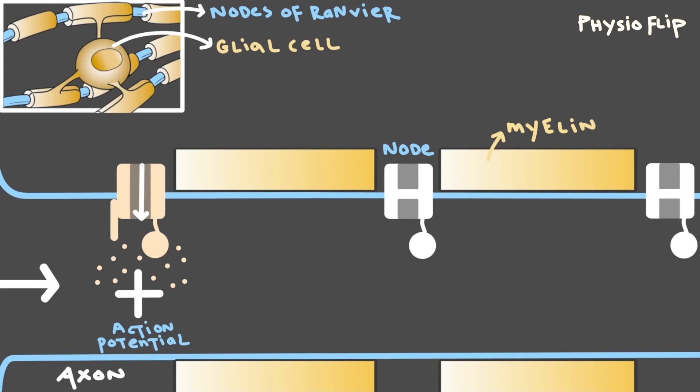After the sodium has entered the cell though, it will begin to diffuse down the axon. Normally, diffusion is a terrible way to send electrical signals. Diffusion over long distances is extremely slow and diffusion of electrical charge will lose a lot of strength as it travels as we've mentioned in past videos.